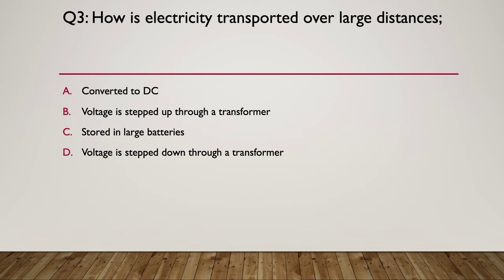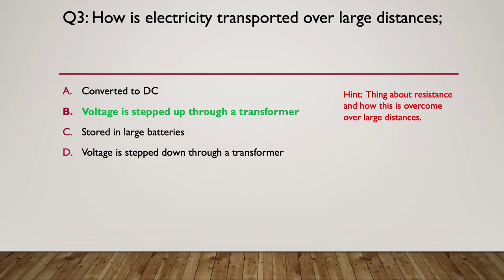So pause here while you have a think. The hint is, think about resistance and how it is overcome over large distances. So if we have long cables, we're going to have large amounts of resistance. How might we overcome it? The answer at this time is B, voltage is stepped up through a transformer. So we often generate at about 15,000 volts, but we jump up to about 330,000 volts to transfer over large distances. That very high voltage overcomes the high resistances in the cables.